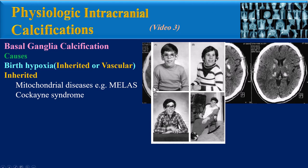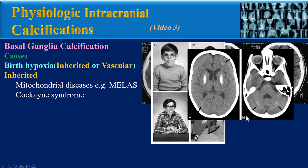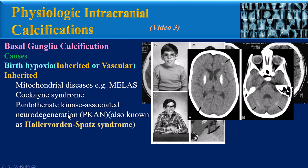Another inherited cause is Cockayne syndrome. Cockayne syndrome is a rare disorder characterized by an abnormally small head size (microcephaly), short stature, and delayed development. These axial CT images relate to patients with Cockayne syndrome. The axial CT scan at the basal ganglia level shows severe bilateral calcification in the putamen, and subtle calcifications are also seen in the frontal and parietal cortex at the depths of the sulci.